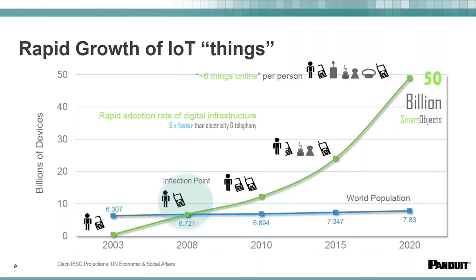In the industrial world, we're seeing a similar explosion related to wireless sensing devices. Industrial automation control systems are now leveraging some of these wireless devices. We've got many different types of sensors now providing real-time information to dashboards and to people in manufacturing on their smartphones. Right now we're expecting 50 billion — that's a billion with a B — smart objects out in the industry by 2020.